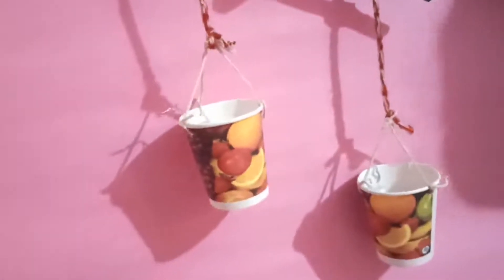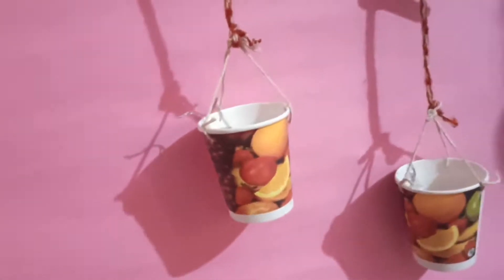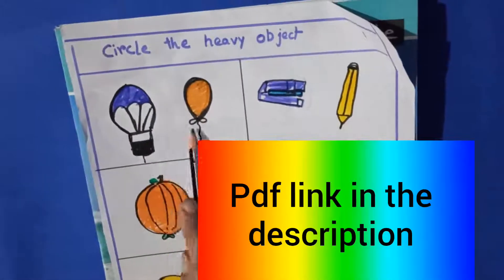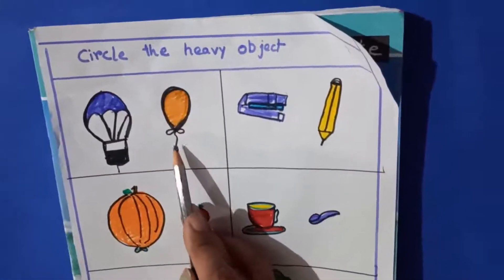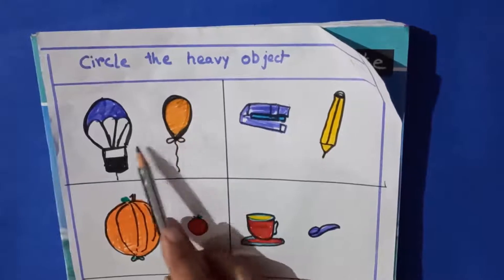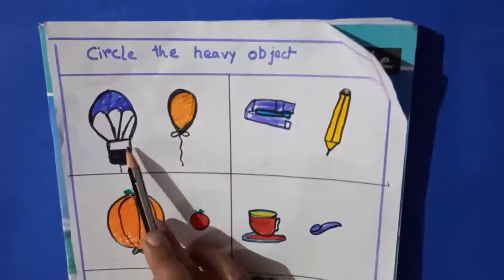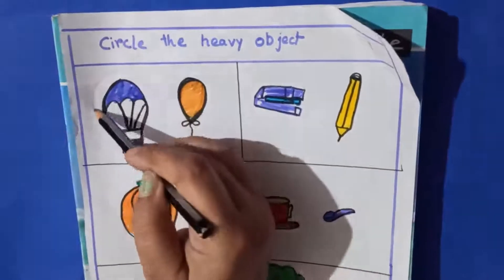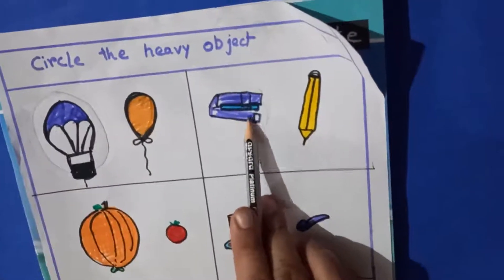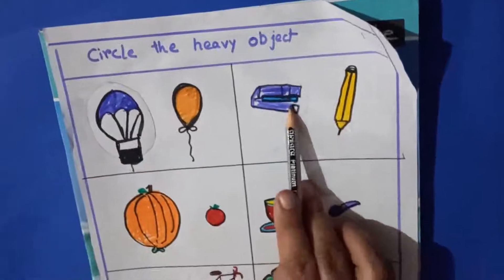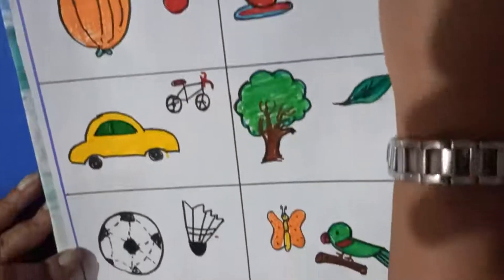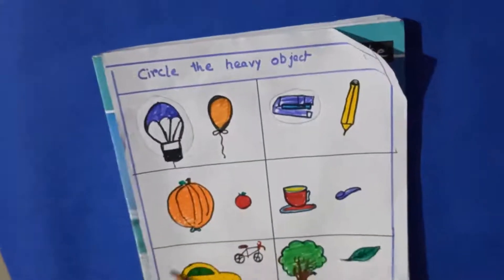That way, you can come to know which one is heavy and which object is light. Here is one worksheet — you can compare the things and circle the one which is heavy. Between a balloon and a parachute, the balloon is light and the parachute is heavy, so circle the parachute. Between a pencil and a stapler — the stapler is made of steel so it is heavy; circle that one. Compare all the objects and circle the heavy one.